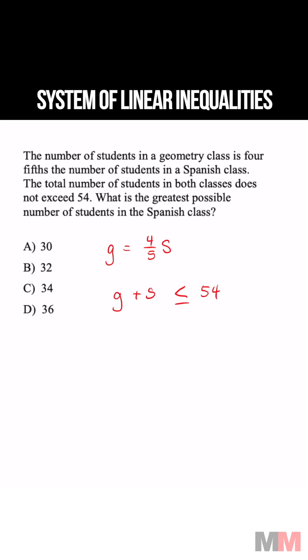What is the greatest possible number of students in the Spanish class? So we're going to replace this g with this expression right here. Four-fifths s plus s is less than or equal to 54.